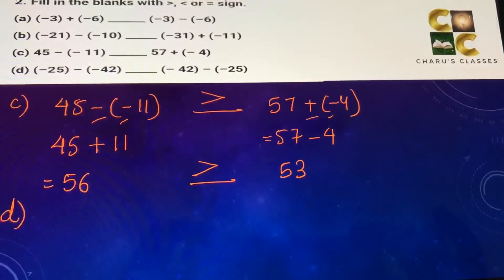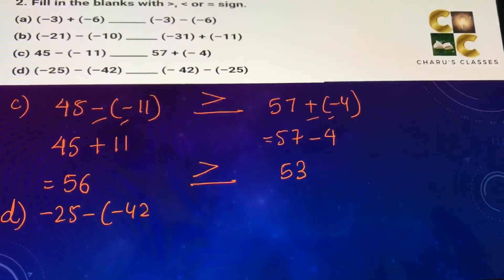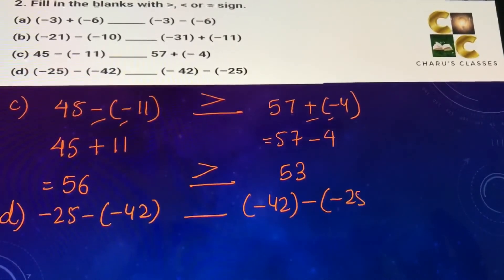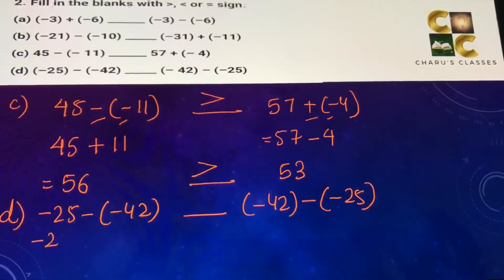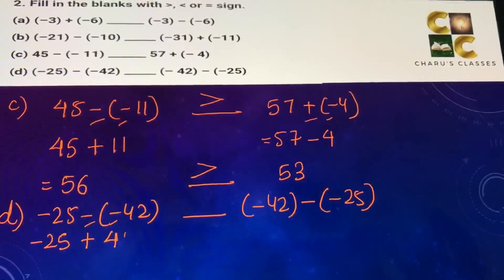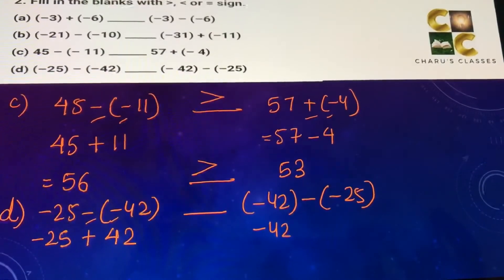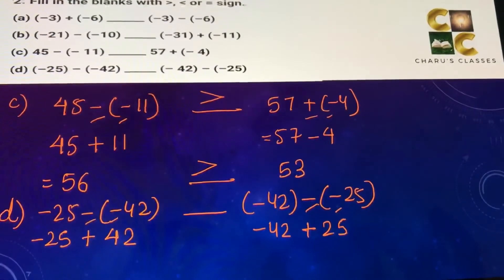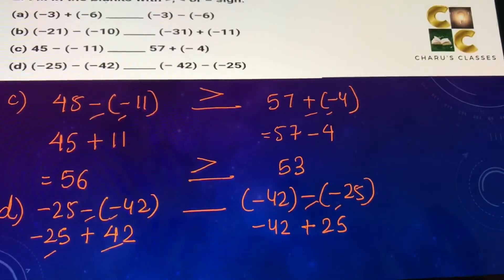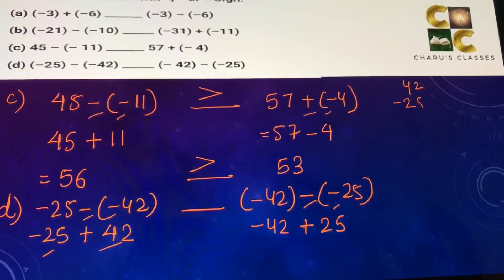Part d: minus 25 minus minus 42 dash minus 42 minus minus 25. On the left side, minus minus becomes plus, so we have minus 25 plus 42. On the right side, minus minus becomes plus, so we have minus 42 plus 25. When one number is positive and one is negative, we always subtract.